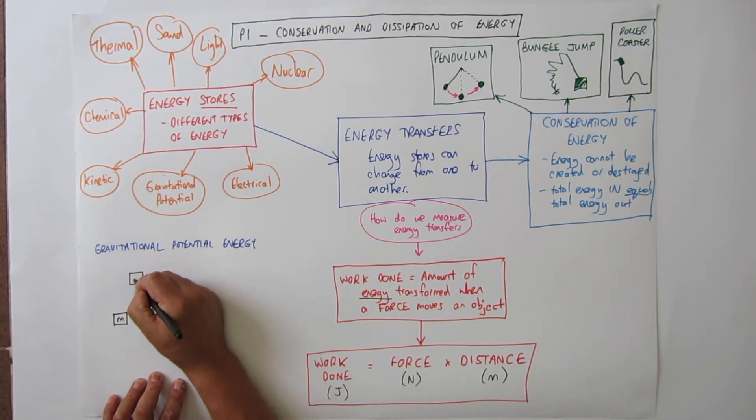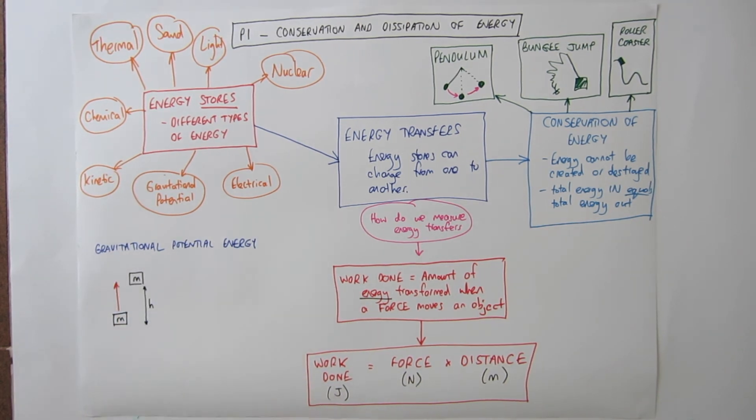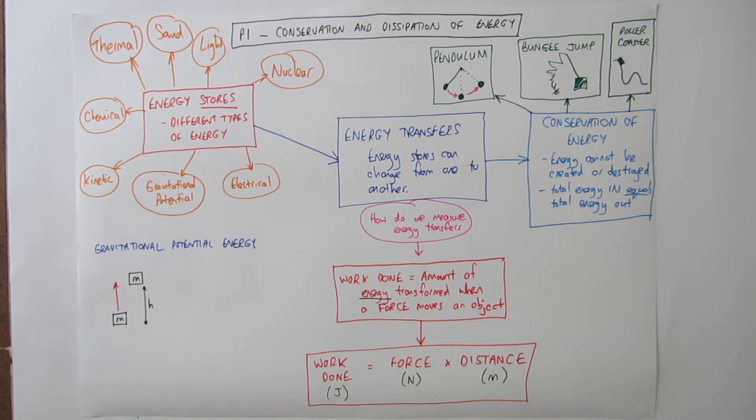Don't forget gravitational potential energy is determined by how high an object is off the ground. The higher it is the more GPE it has. Let's consider a mass M that's moved up through height H.